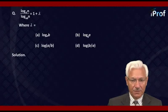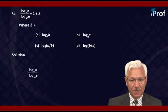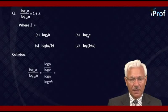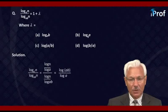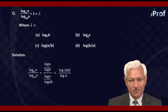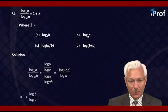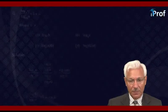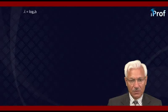Consider the given expression: log n to the base a divided by log n to the base ab equals log of ab upon log a, using the base change formula. Log n cancels. Log AB can be replaced by the product rule: log A + log B, which is 1 + log B upon log A, or 1 + log B to the base A. Comparing with 1 + λ shows that λ = log B to the base A, which is option A.